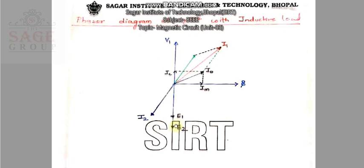The EMF induced is E2, and this E2 voltage is what the load receives, so the load voltage is E2. The current flowing in the load is I2, and since we have an inductive load, I2 lags E2. The current that the load demands from the primary is I2 dash. As discussed earlier, I2 dash is just opposite to I2, meaning the load current I2 demands an equivalent current from the primary, which we denote as I2 dash. This green line in the diagram is showing your I2 dash.